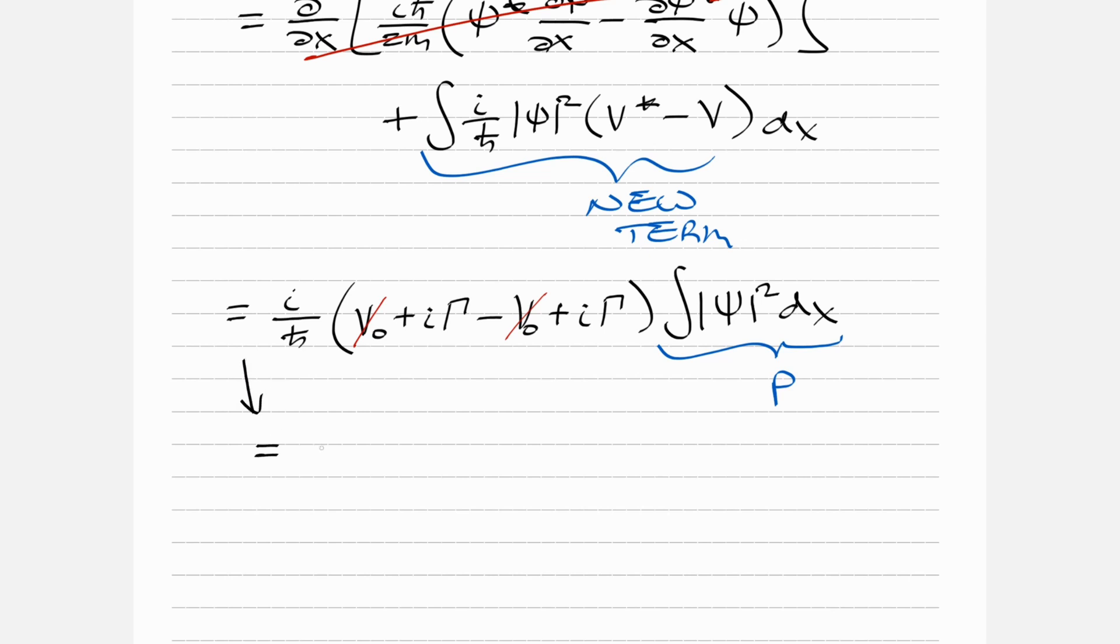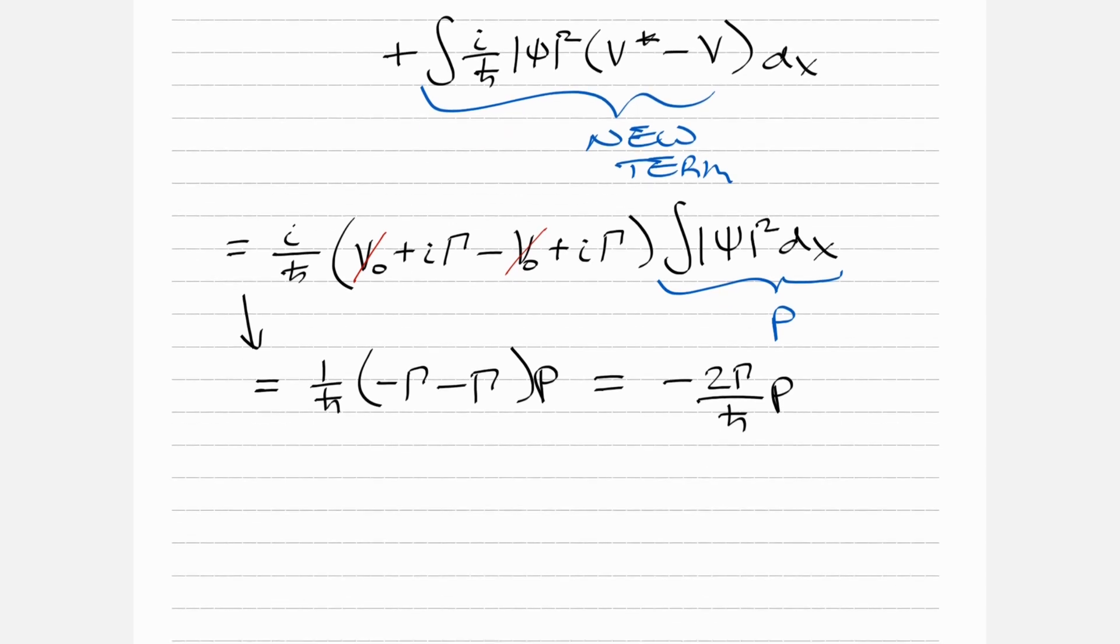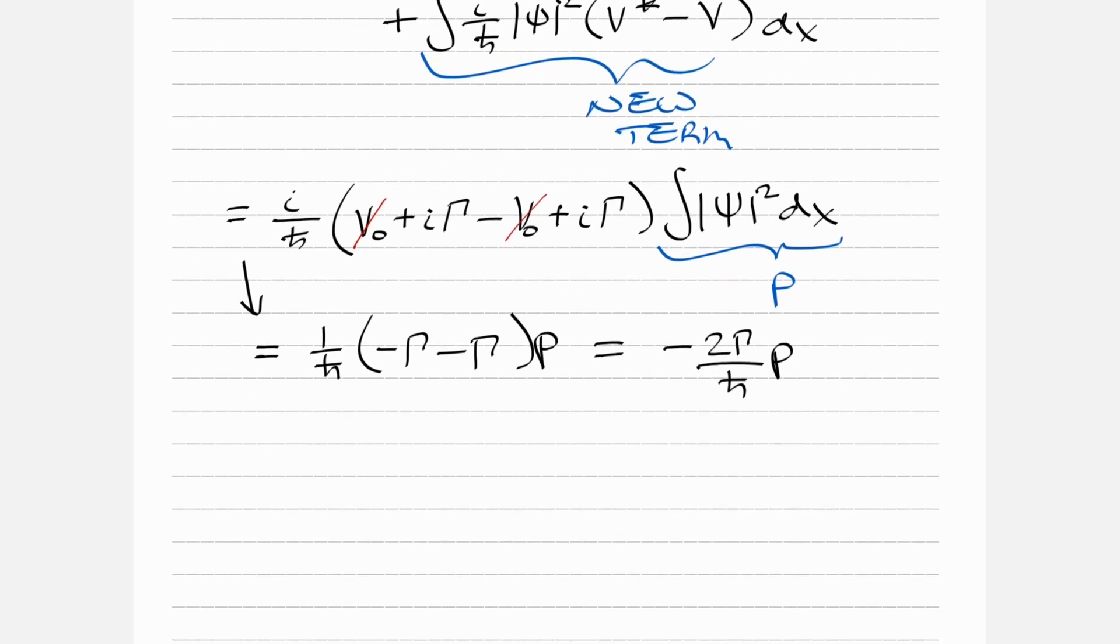We're going to distribute in the i. We have 1 over ℏ bar times -2γ times P, so that equals minus 2γ over ℏ bar times P. Thus we found that dP/dt equals minus 2γ over ℏ bar times P, as we've been asked to do. That is verified.